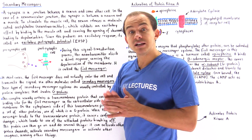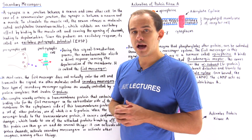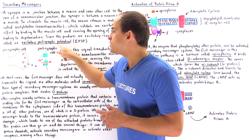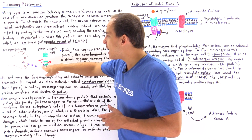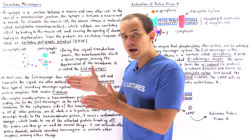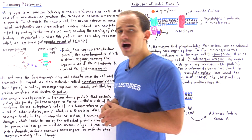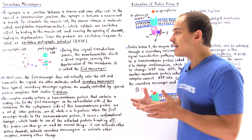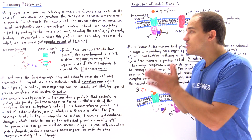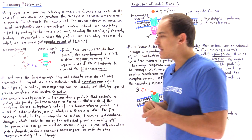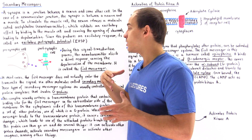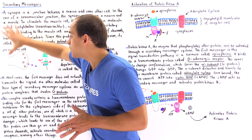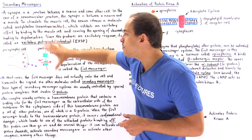Acetylcholine is released into the synaptic cleft and binds to receptor protein channels found on the postsynaptic muscle cell membrane. Binding causes these channels to open, producing an influx of sodium ions into the cell. This causes depolarization of the membrane, which essentially creates an action potential — and this is what we mean by the signal transduction process, passing the electrical signal from the presynaptic cell to the postsynaptic cell.